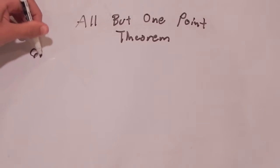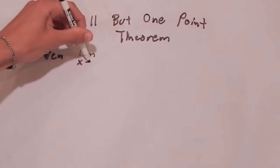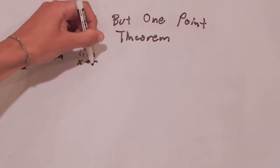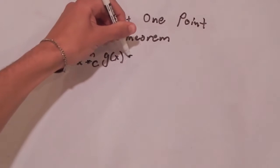So first we're going to talk about what the all but one point theorem states. And it states that given—oops, I should probably do it via G. Given that the limit as X approaches C of G of X is equal to L.